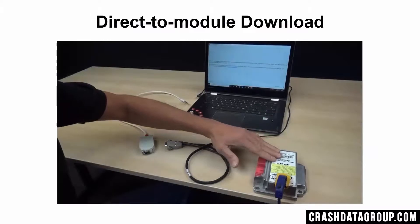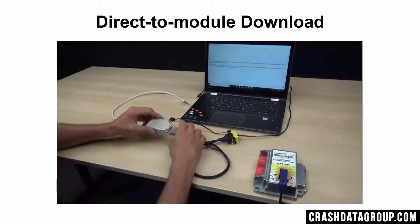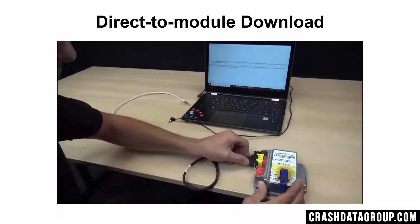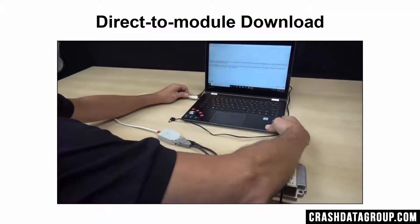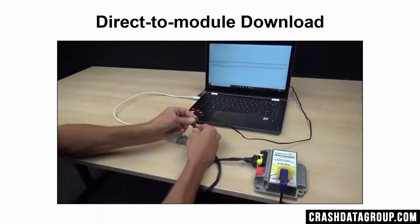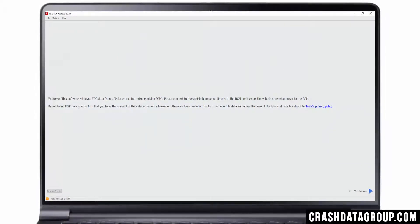For a direct-to-module download, clamp the RCM to your work surface if it has been removed from the vehicle. Open the Tesla EDR retrieval program on your computer. Connect the appropriate connection cable to the PCAN device. Insert the connection cable into the corresponding port on the RCM. Connect the PCAN device to an open USB port on your computer. Connect the AC power supply to the power socket on the connection cable to provide power to the RCM. The EDR retrieval program automatically attempts to connect to the RCM. When connected properly, a green circle and the message 'connected to RCM' will be displayed in the lower left corner of your computer screen.